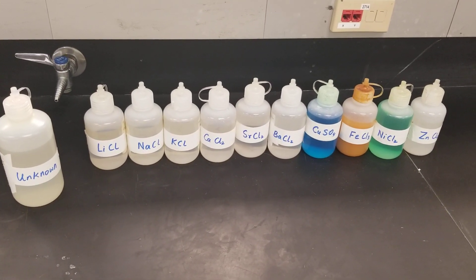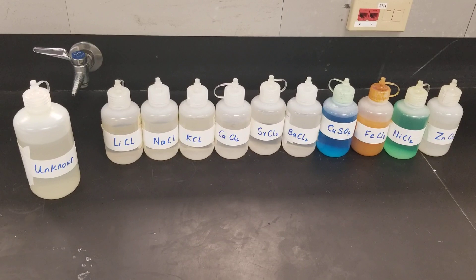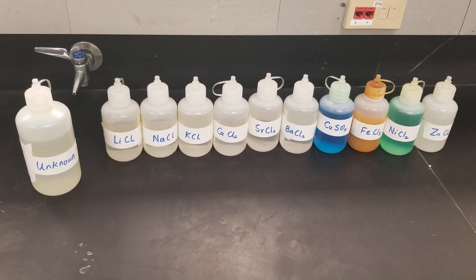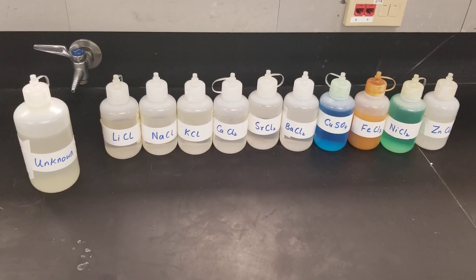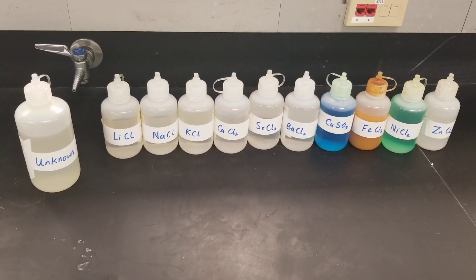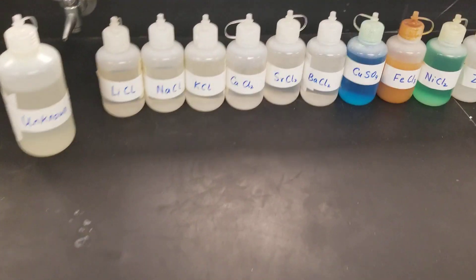This is the Chemical Reaction 3 lab. The purpose of this lab is to identify the metal by doing the flame test and precipitation reaction, and to identify the halide by the common halide test.